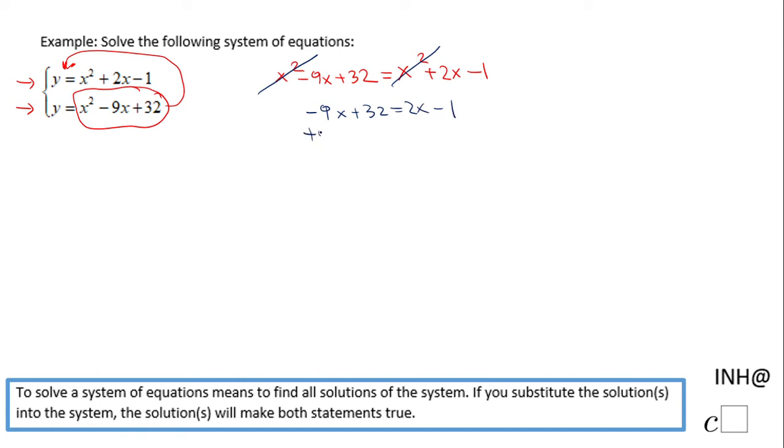I will add 9x here. Of course, you can do this problem in a different way if you want. And we have here 32 equals 11x minus 1. Add 1.